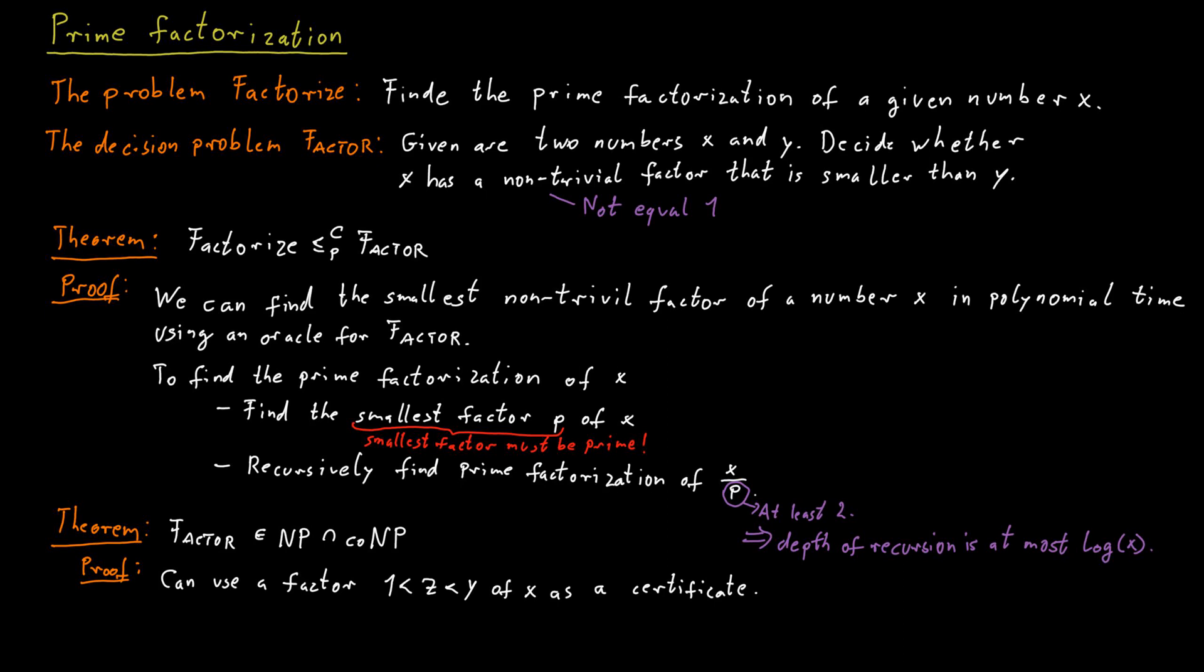To have a succinct disqualifier for factor is a bit more complicated. But it's possible. As a succinct disqualifier, we can use the prime factorization of the number x. And then if none of the prime factors of x are smaller than y, the answer to our problem has to be no. There is no factor of x that is non-trivial and smaller than y.